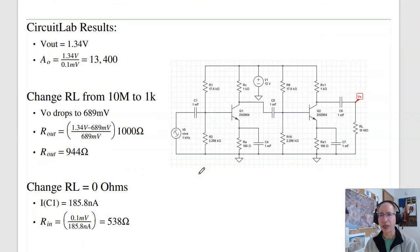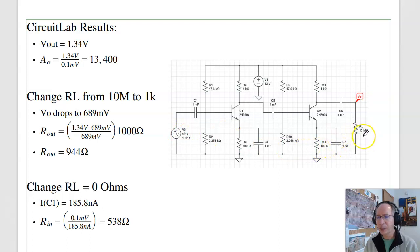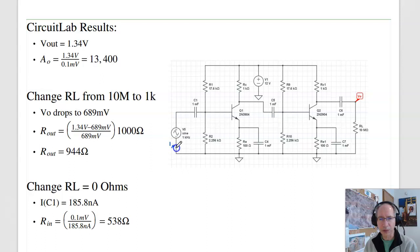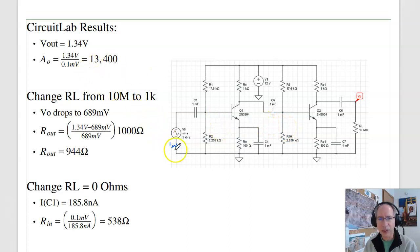In CircuitLab I can test this. Here's my two-stage common emitter amplifier, here's my input, here's my output. Start with the load being 10 megaohms and the input being 0.1 millivolts. Measuring the output voltage, the output is 1.34 volts. The gain is output over input: 1.34 over 0.1 millivolts gives a gain of 13,400.